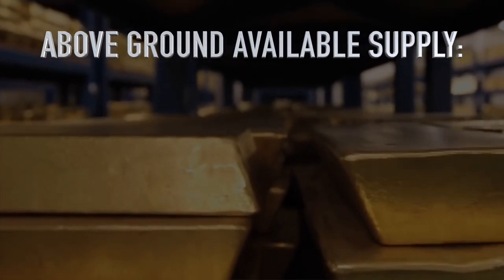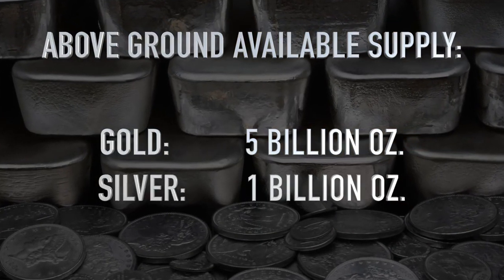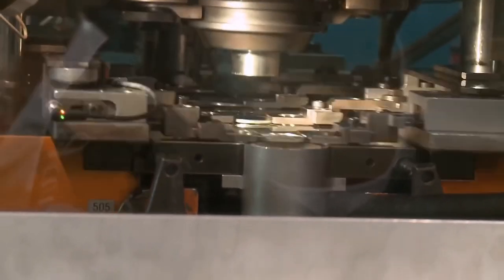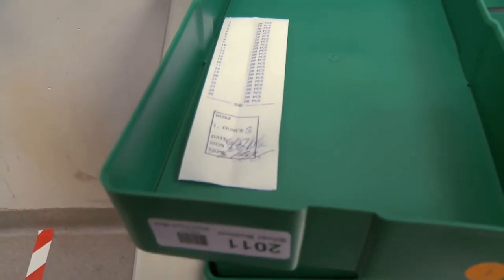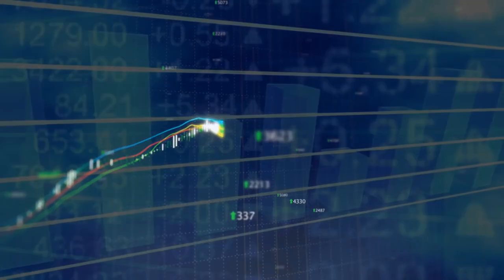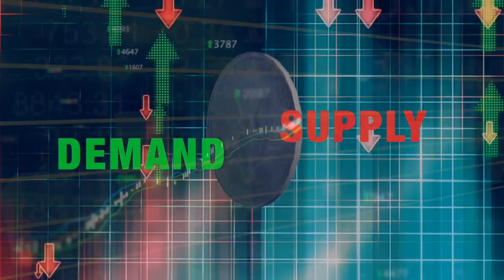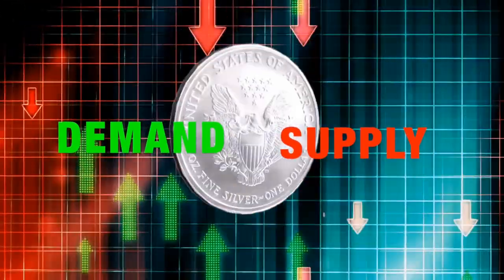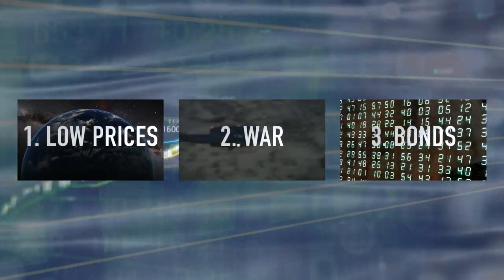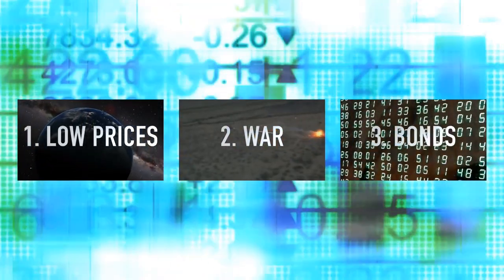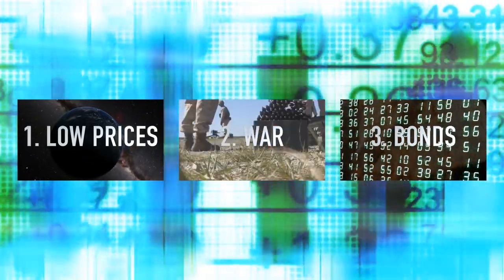The above-ground available supply of gold is north of 5 billion ounces; for silver, it's estimated around 1 billion ounces — and coins like the American Eagle may be as good as gone, so the number could be far less. If investors flee into gold, they will flood into silver, whose supply is much smaller. The perfect catalyst for silver to roar through the $50 an ounce mark is here, happening in 2016. Demand is surging, supply is contracting, and there are three separate but very likely catalysts — even one of them making a headline could send the price of silver soaring.